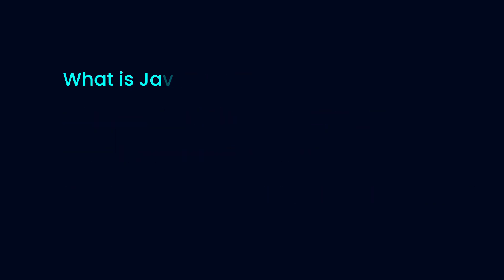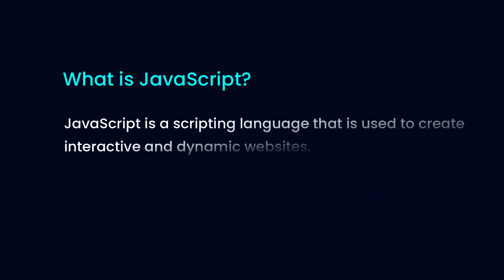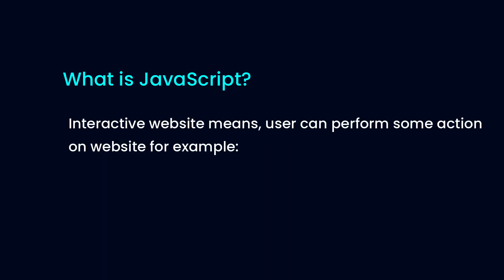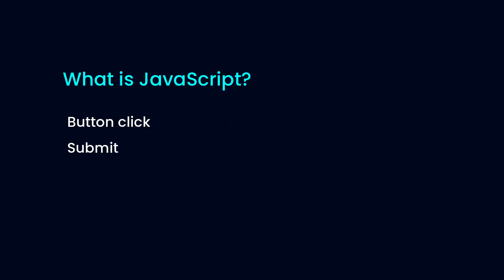So what is JavaScript? JavaScript is a scripting language that is used to create interactive and dynamic websites. Interactive website means user can perform some action on the website, for example, button click, submit a form, write comments, and live chat.